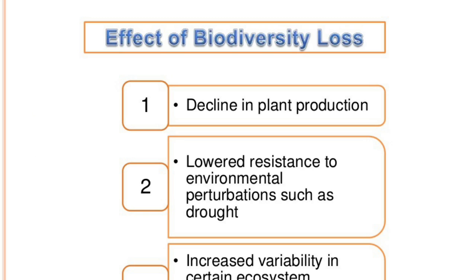Effects of biodiversity loss: first, decline in plant production; second, lowered resistance to environmental perturbations such as drought; third, increased variability in certain ecosystems.